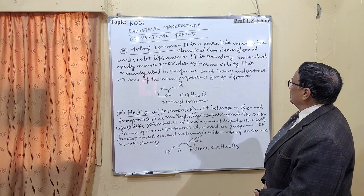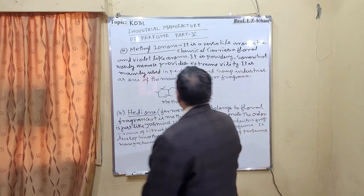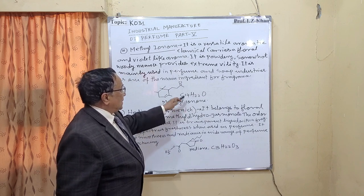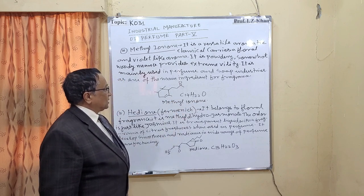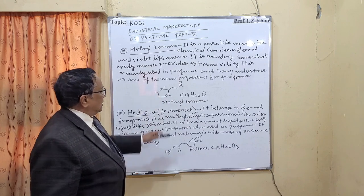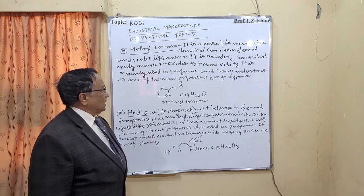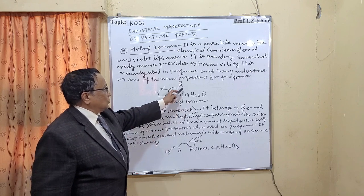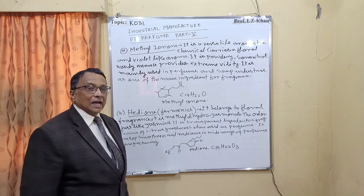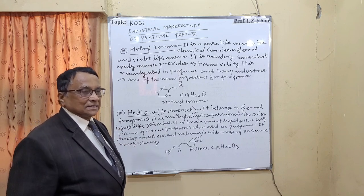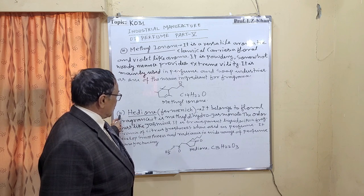Methyl ionone is a versatile aromatic chemical with a floral and violet-like aroma. It is powdery and somewhat woody, providing extreme longevity. It is mainly used in perfume and soap industries as one of the main fragrance ingredients. Its formula is C14H22O, and its structure is similar to alpha-ionone and beta-ionone except that an extra methyl group is added to the keto group.